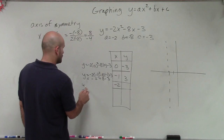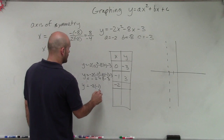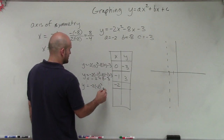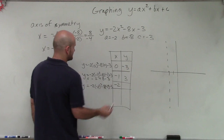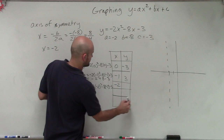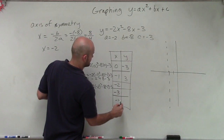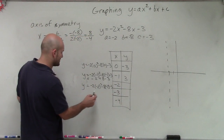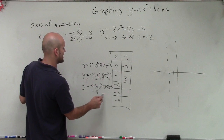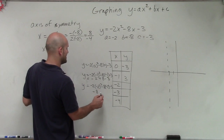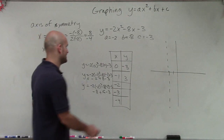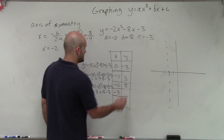And then for x equals negative 2: y equals negative 2 times negative 2 squared minus 8 times negative 2 minus 3. Let's also note we'll pick two points to the left — negative 3 and negative 4 — but I'm not going to evaluate those; I'll show you why in a second. Negative 2 squared is 4, times negative 2 is negative 8. Negative 2 times negative 8 is positive 16 minus 3, so that gives me positive 5.